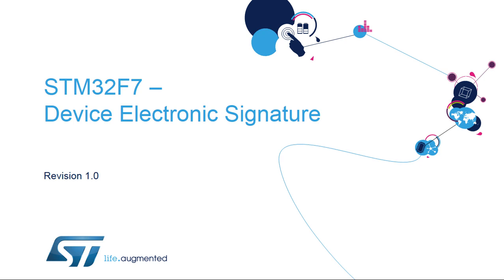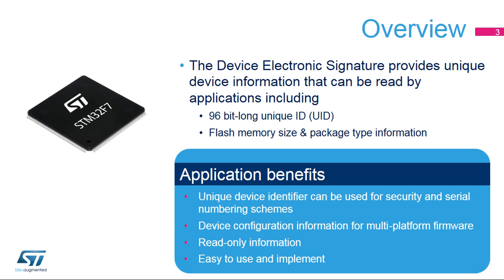Hello, and welcome to this presentation of the STM32 Device Electronic Signature, which can be used as a device identification or serial number. The Device Electronic Signature provides a set of registers containing die identification, unique device identifier, or UID, and other read-only device information, such as memory size, package type, and device calibration information.